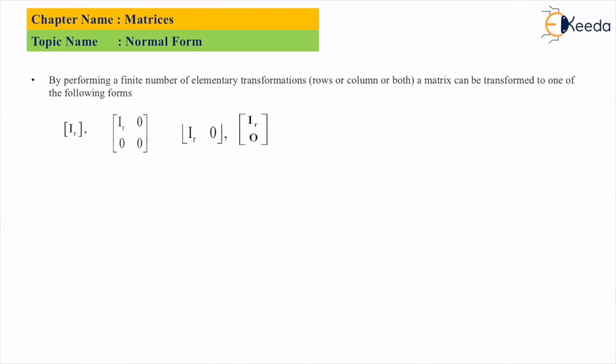If you have a matrix and want to convert it to normal form or canonical form, what we do is apply a few row and column transformations, or sometimes both types of transformations on the matrix, to convert it into one of the four forms.